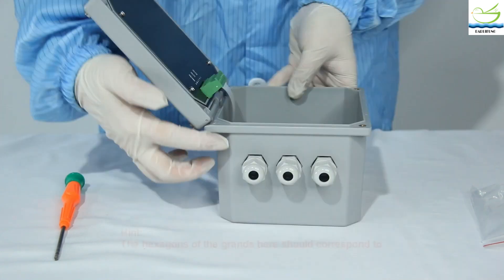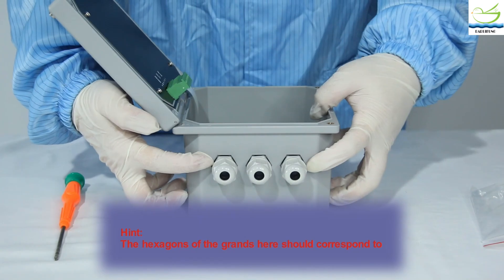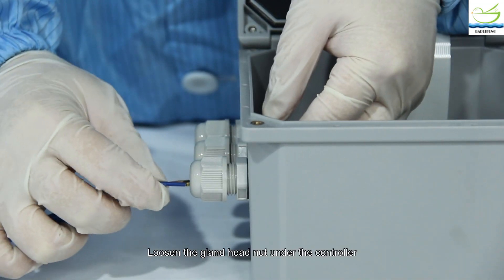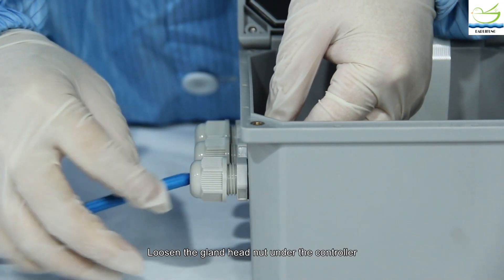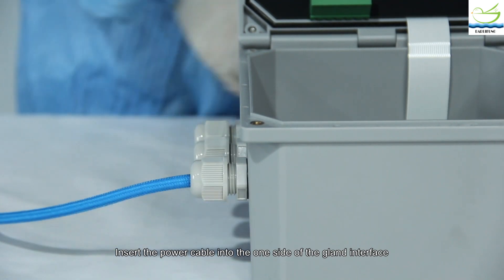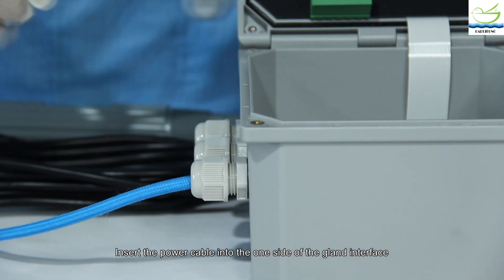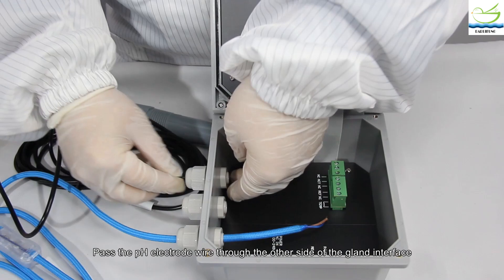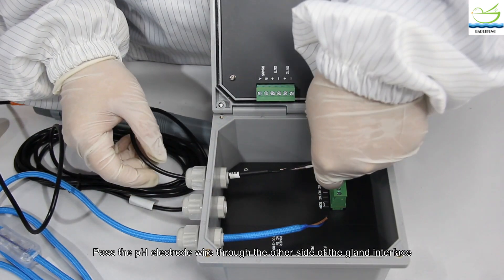Tighten the inner nut of the glands. Loosen the gland head nut under the controller. Insert the power cable into one side of the gland interface. Pass the pH electrode wire through the other side of the gland interface.